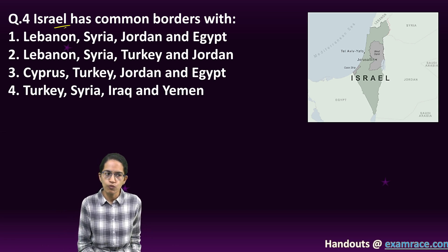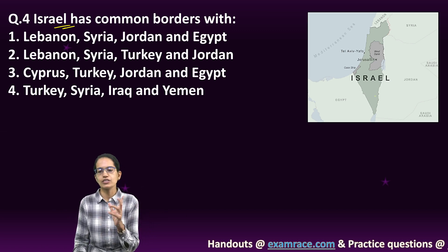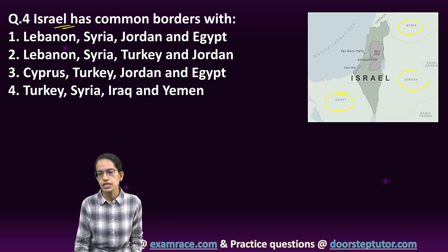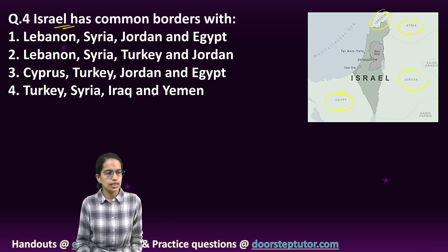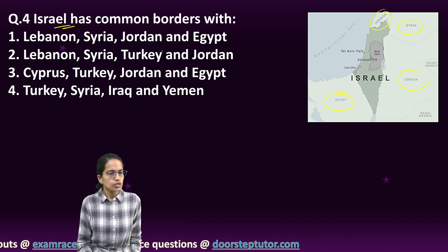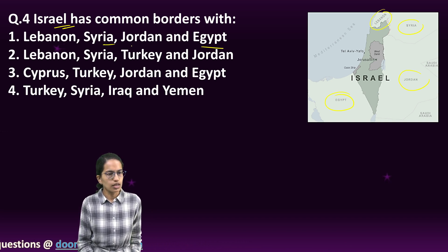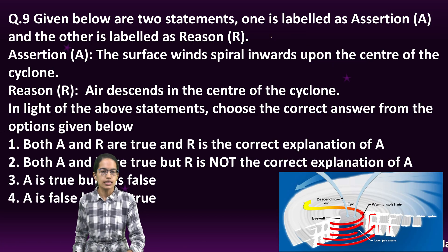Another important question from World Geography: Israel borders with — as you can see on the map — Egypt, Jordan, Syria, and Lebanon. That is the correct answer. Egypt, Syria, Jordan and Lebanon — so the first choice itself is the right answer here.